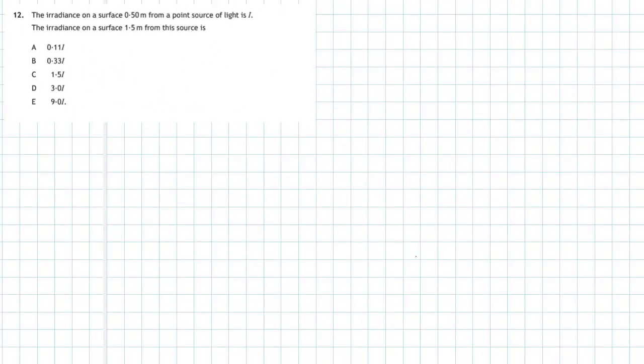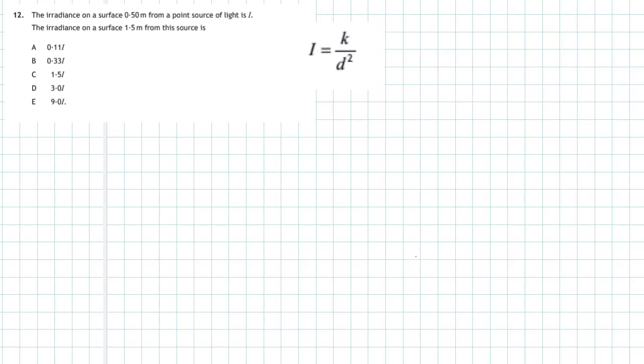Question 12 from Section 1 of the 2018 Higher Physics examination. The irradiance on a surface 0.5 metres from a point source of light is I. The irradiance on a surface 1.5 metres from this source is — and you're given five choices. From the data book, the equation for irradiance is I = k / d², meaning irradiance equals a constant divided by the distance from the point source squared.